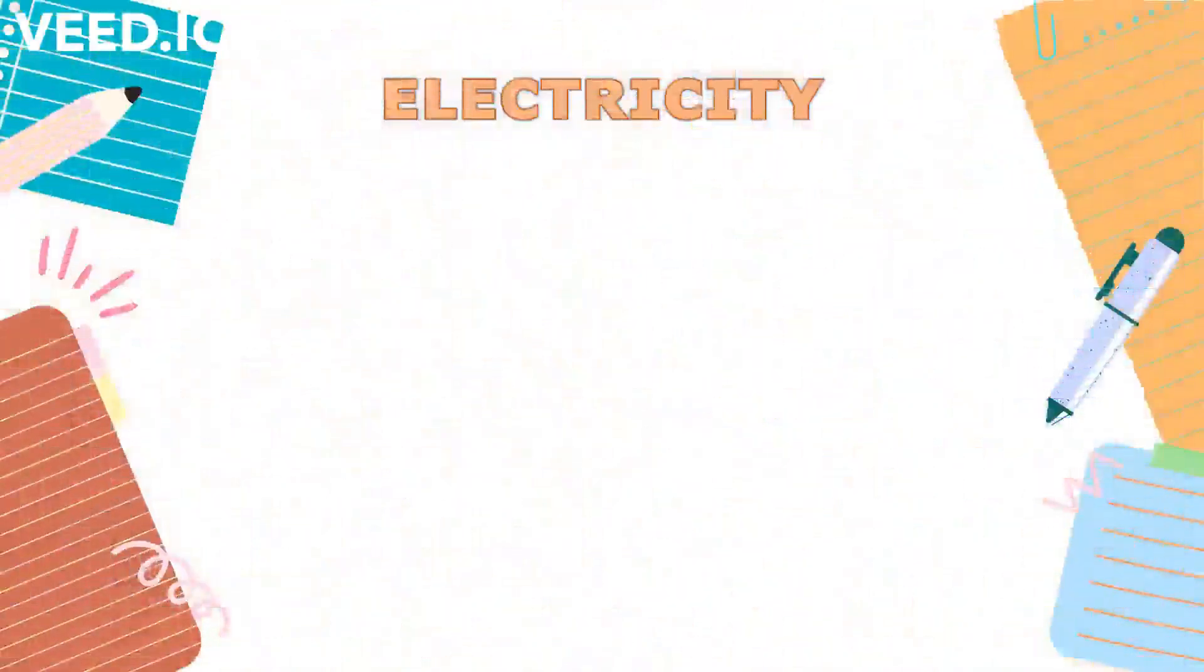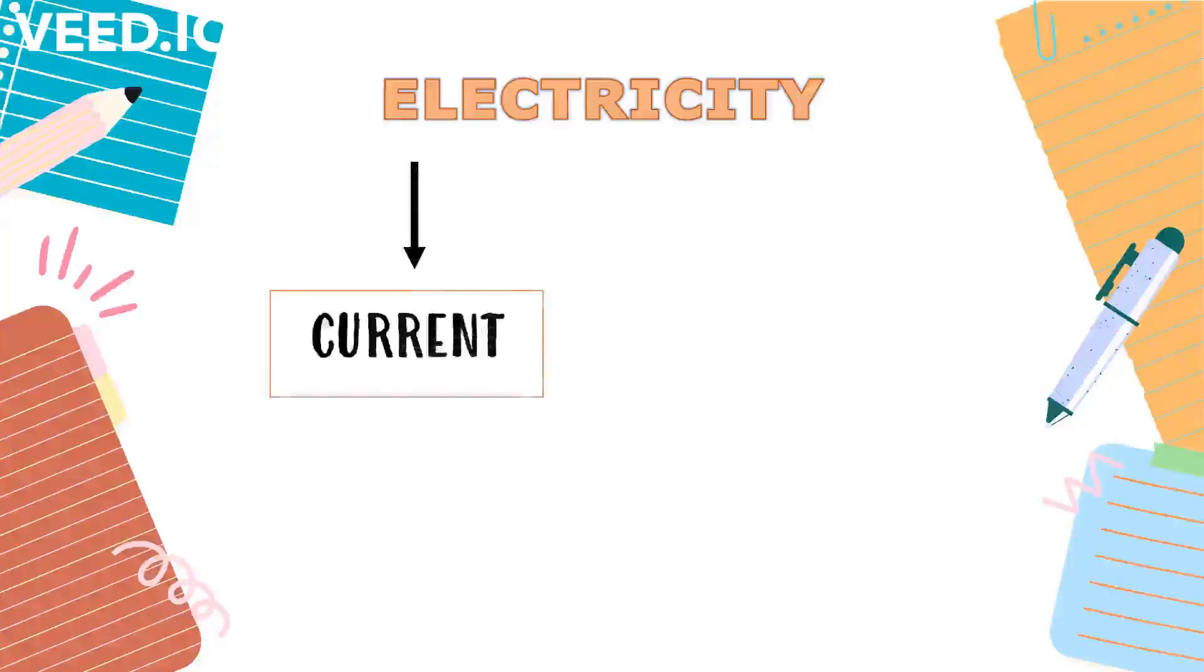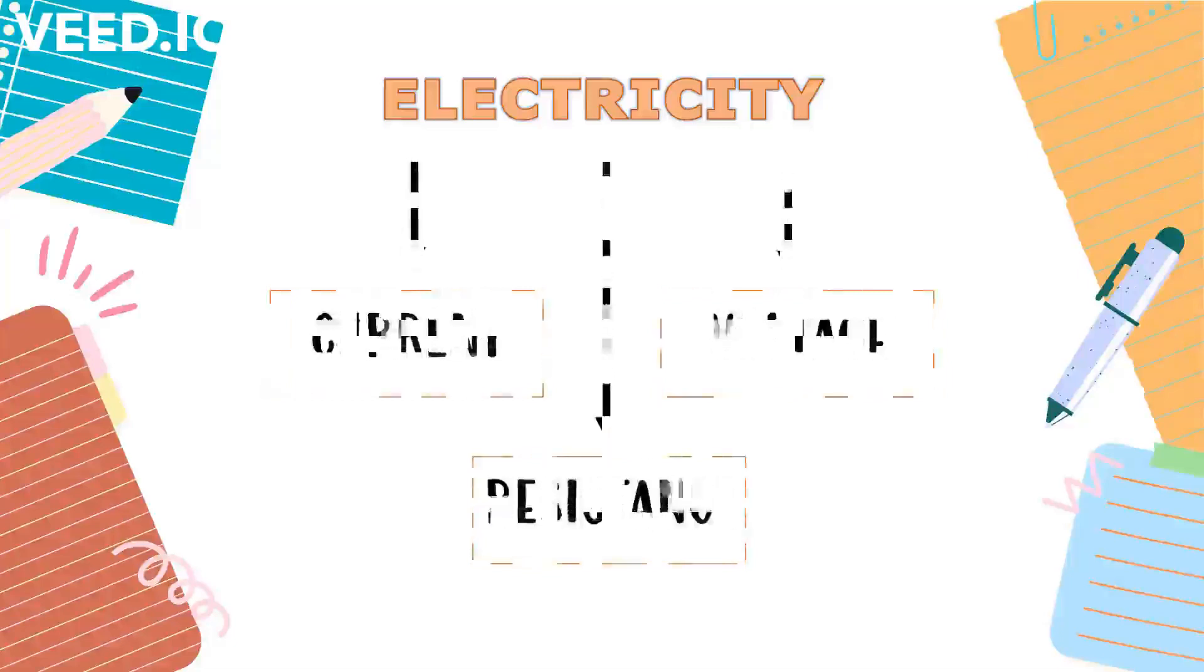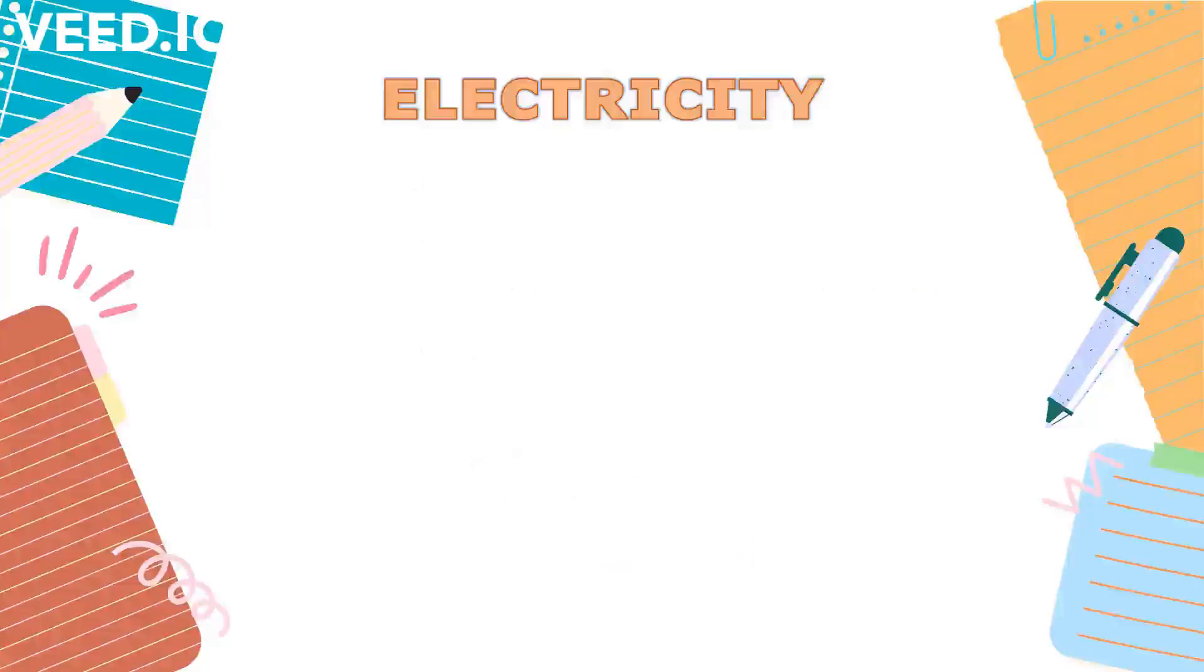The three fundamental quantities in this lesson are the following: current, voltage and resistance. Let's define each.